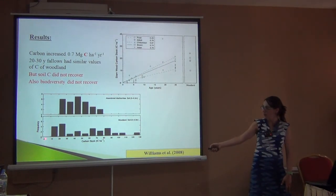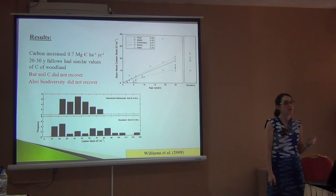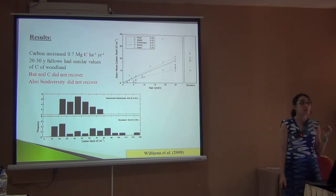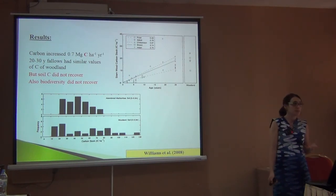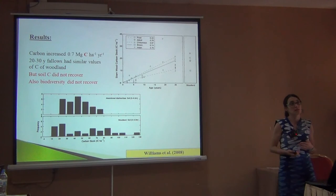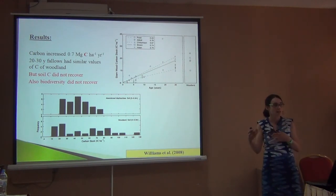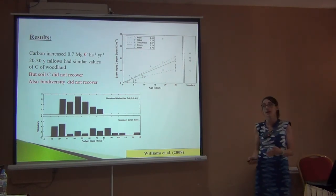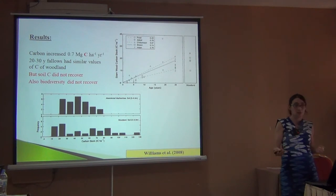One key takeaway is that if you have a carbon project, especially a restoration project, you can plant trees or let them grow — but to restore soil carbon takes a very long time. Also, biodiversity did not recover. Carbon recovers faster in total numbers than species diversity. Slow-growing shade-bearing species come later in succession, so you may have the same amount of carbon but different species — and the benefits to local communities may also differ.